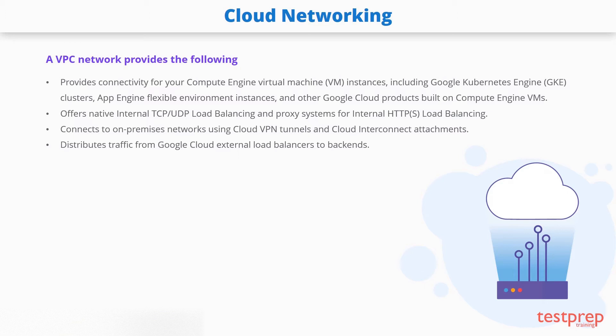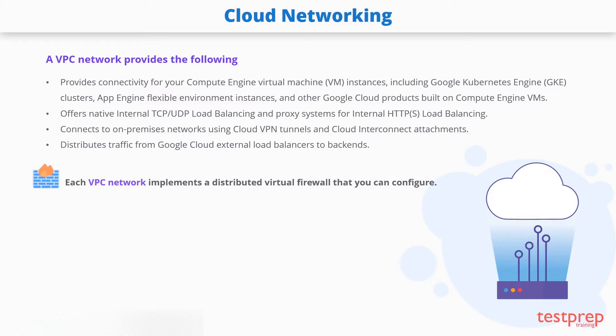You can connect to on-premises networks using Cloud VPN tunnels and Cloud Interconnect attachments. You can distribute traffic from Google Cloud external load balancers to back-ends. Each VPC network implements a distributed virtual firewall that you can configure. Firewall rules allow you to control which packets are allowed to travel to which destinations. Every VPC network has two implied firewall rules that block all incoming connections and allow all outgoing connections.